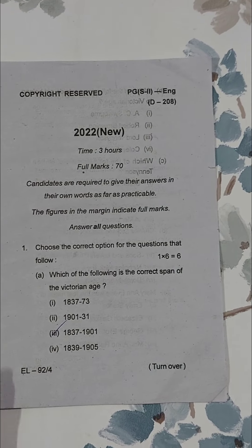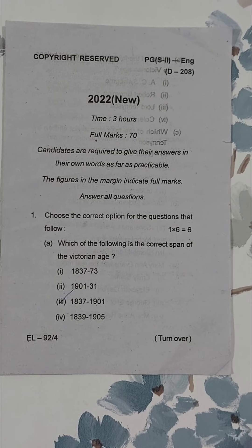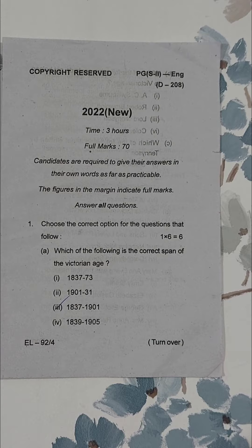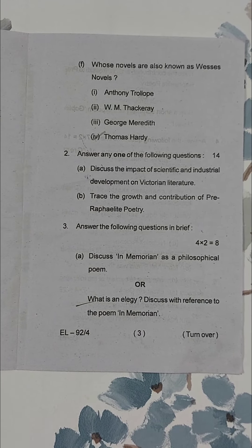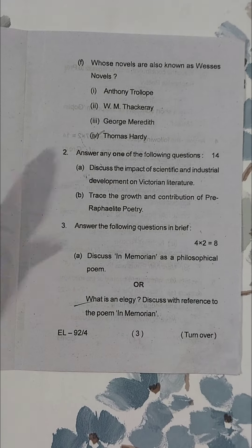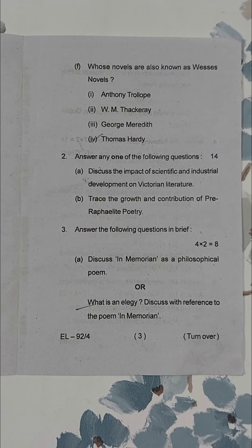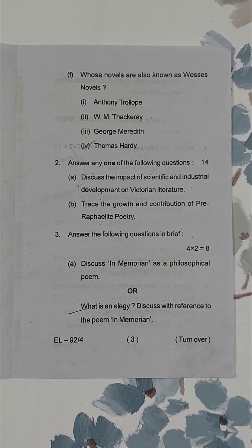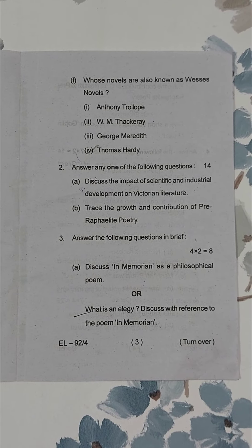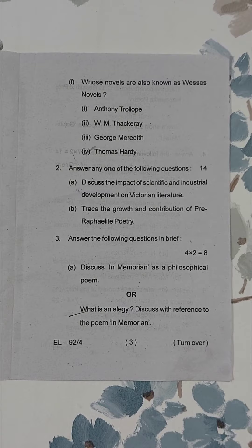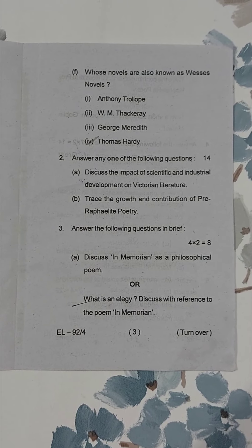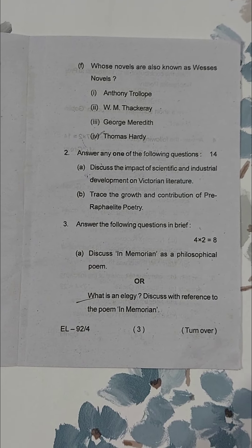Now let's see paper eight. Here you will get six MCQs of one mark each — that is question number one. In question two you have to answer any one from A or B, and that will be of fourteen marks. In question number three, you have to attempt two questions of four marks each, one from A and one from B.